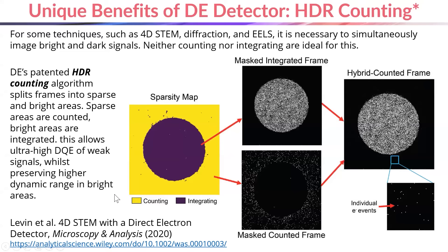One example of where you might use HDR counting is a 4D STEM dataset. In 4D STEM, you typically have a more intense area in the middle — the bright field disk — and a more sparse area outside in the dark field region. If you wanted to make a virtual image with the bright field disk, this is what that might look like processed in the two traditional modes. The specimen here is a standard cross grating. In integrating mode we get a reasonable bright field image, but in counting mode — with both images scaled to the same median intensity — we don't get a very good signal. The counting algorithm cannot keep up with the rate at which the signal is coming in, it loses information, and the contrast gets washed out.